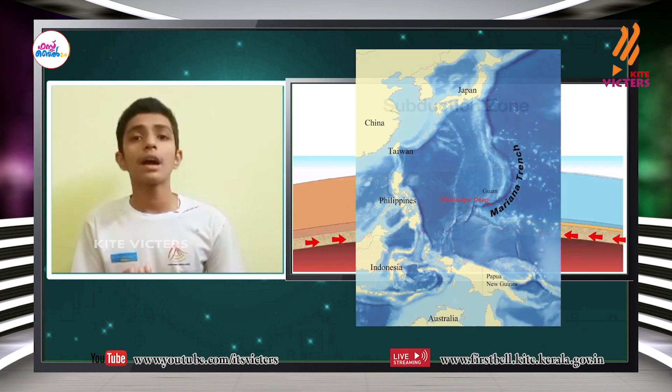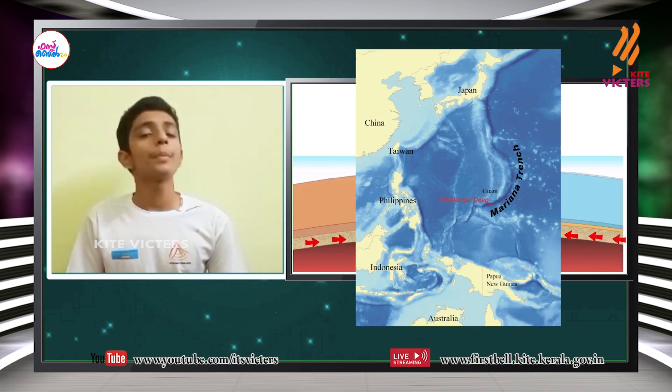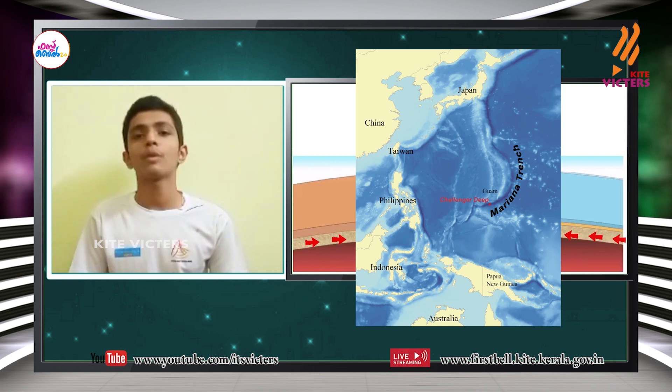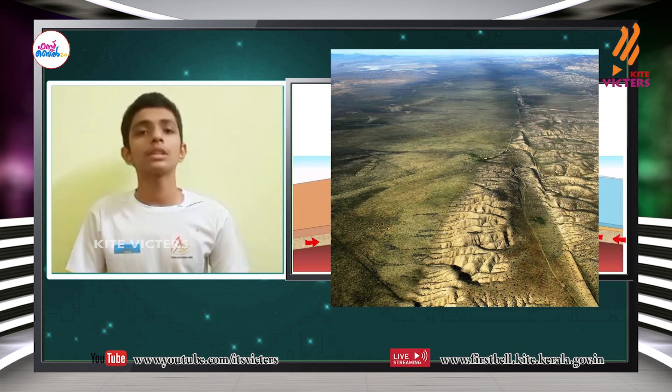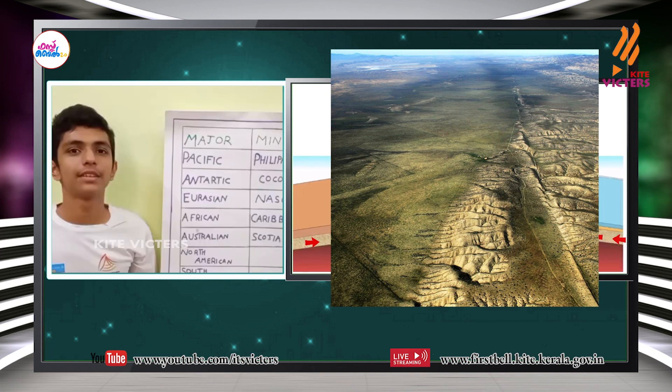Magma comes out from the gap formed by the divergence of plates and solidifies to form mountains. These types of mountains are called mid-oceanic ridges. For example, the Mid-Atlantic Ridge. Fault zones are formed as a result of transform margins. The San Andreas fault zone in North America is an example of this.